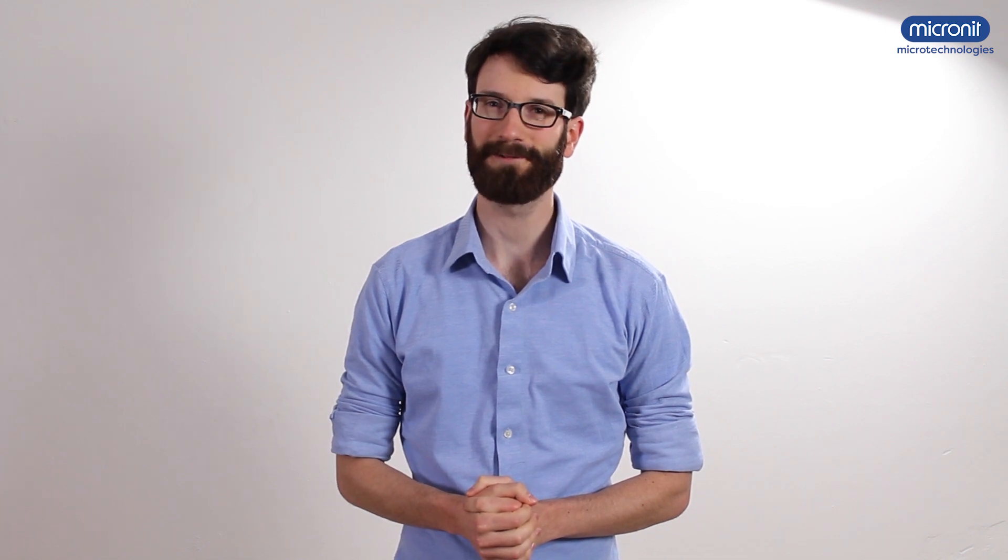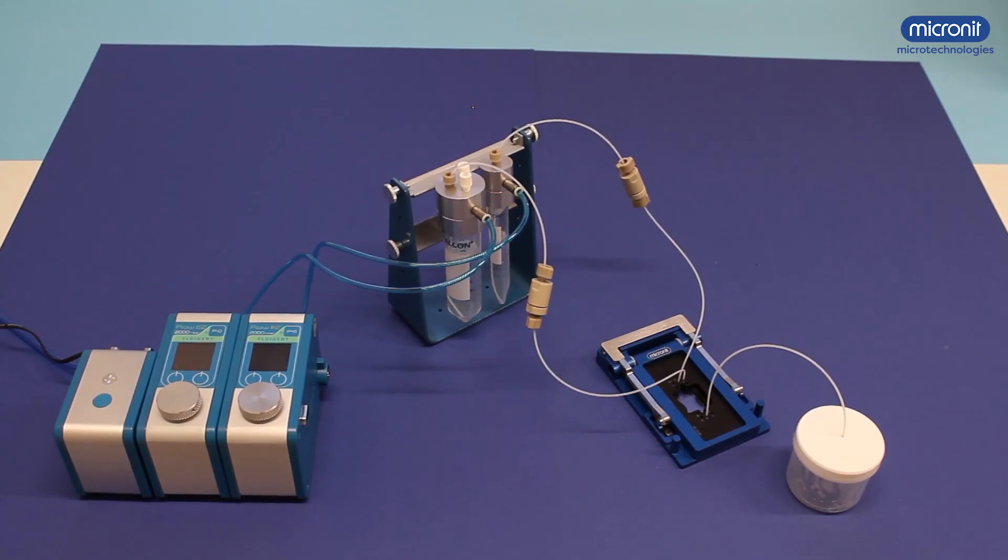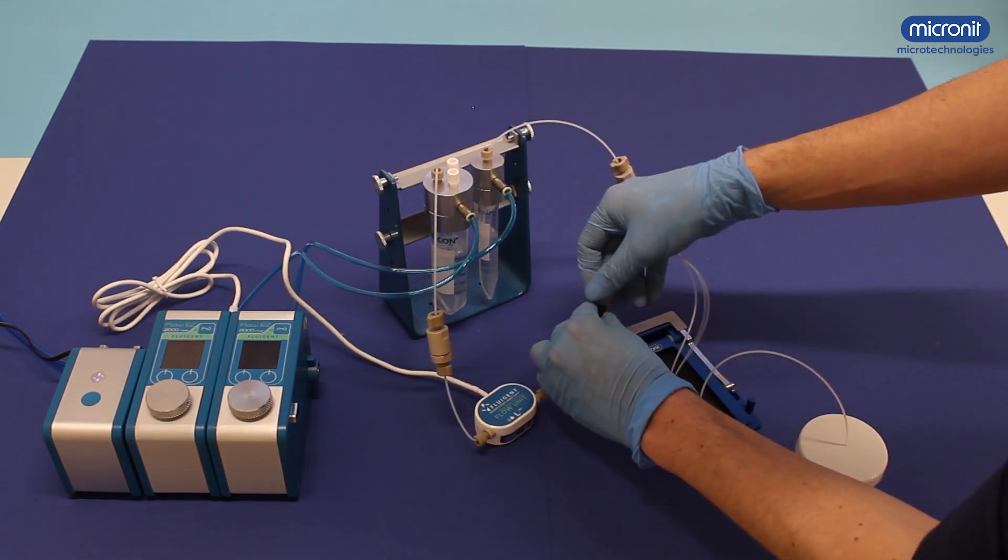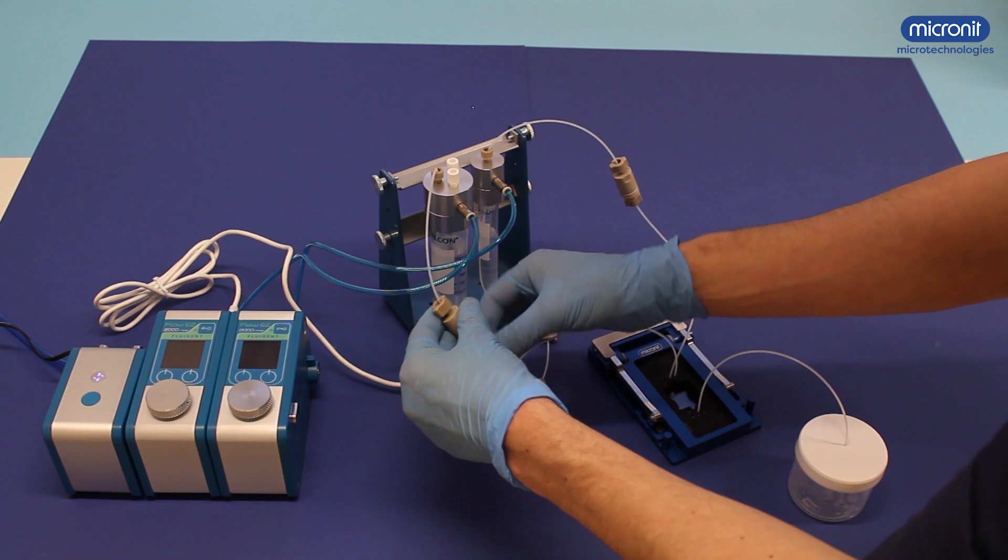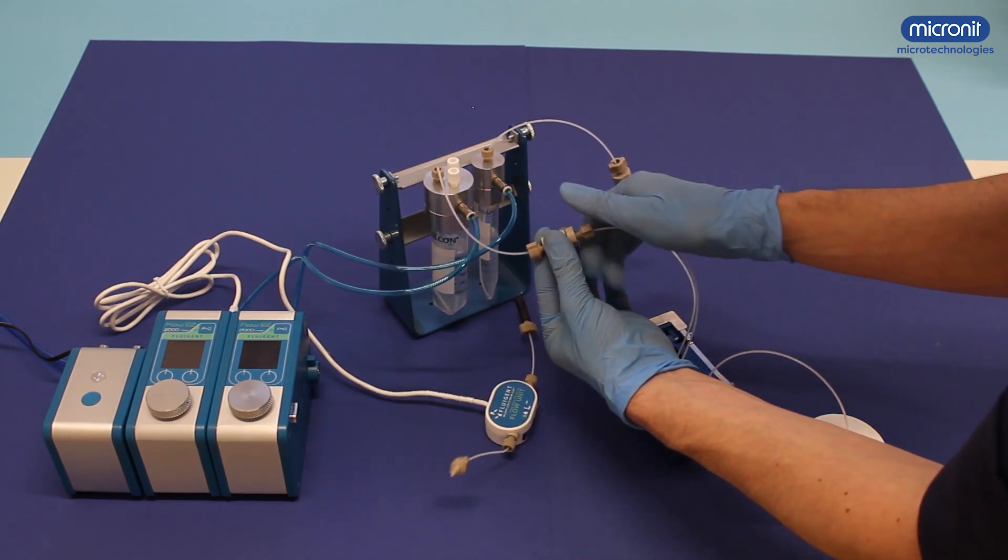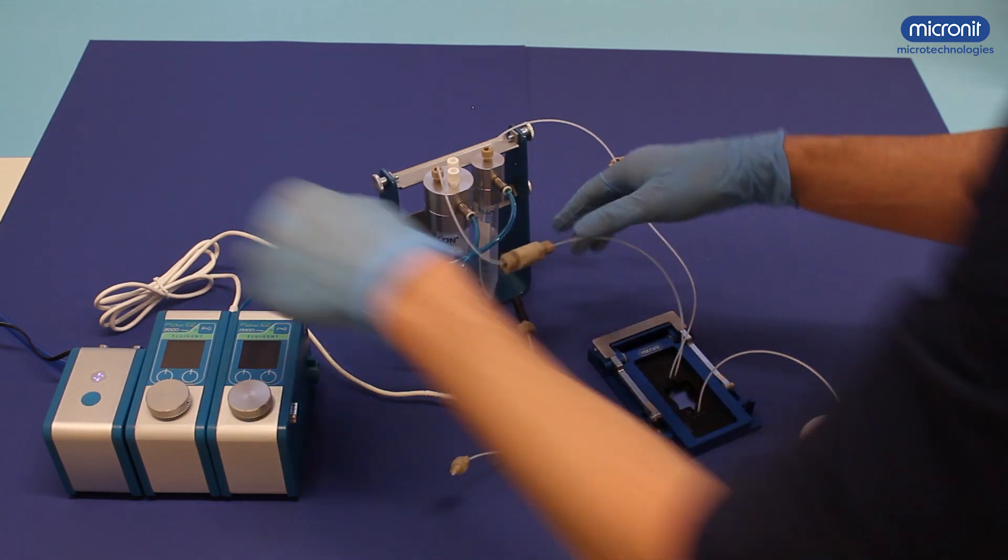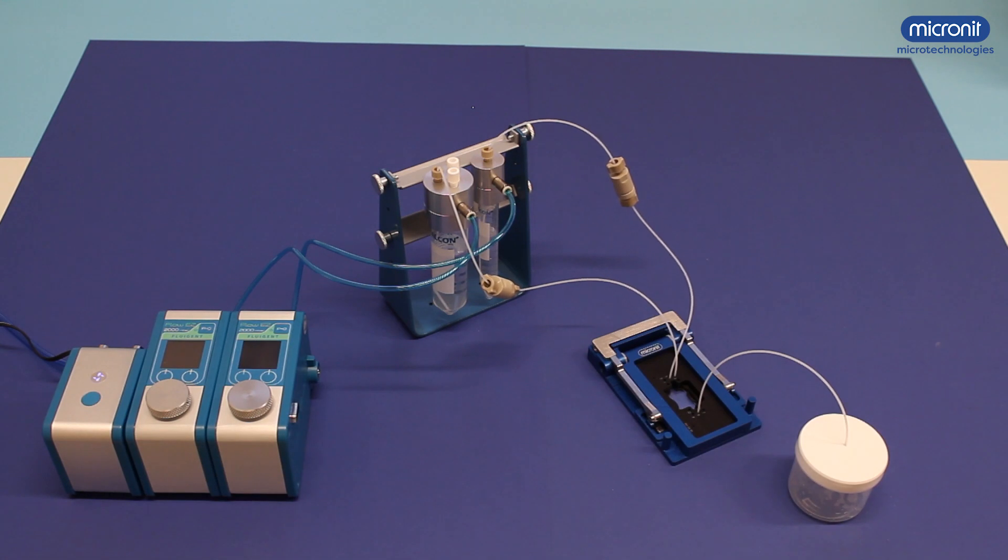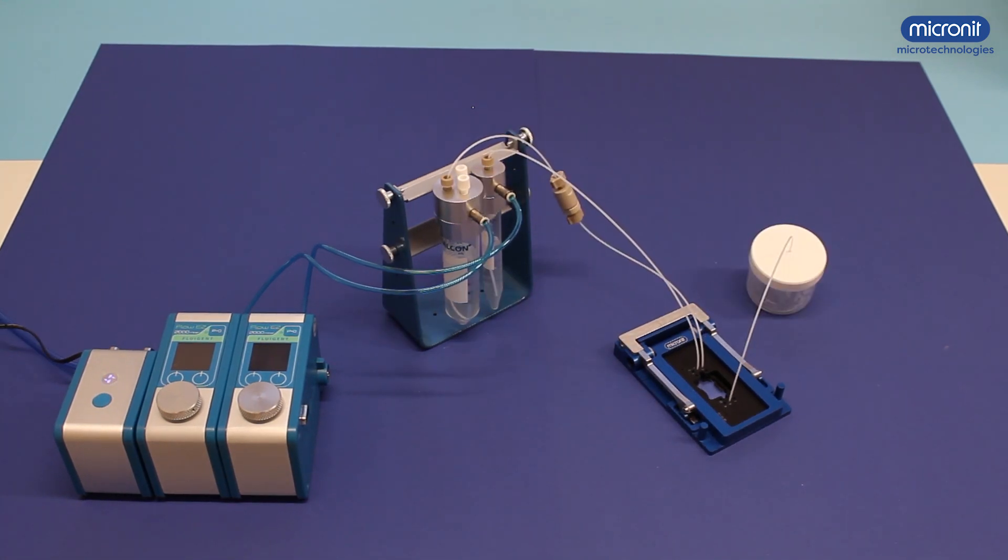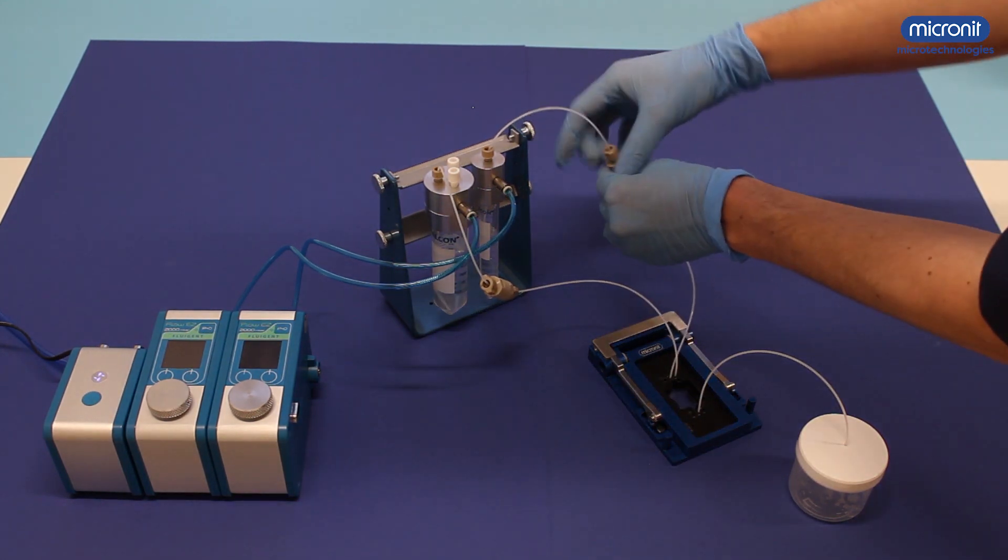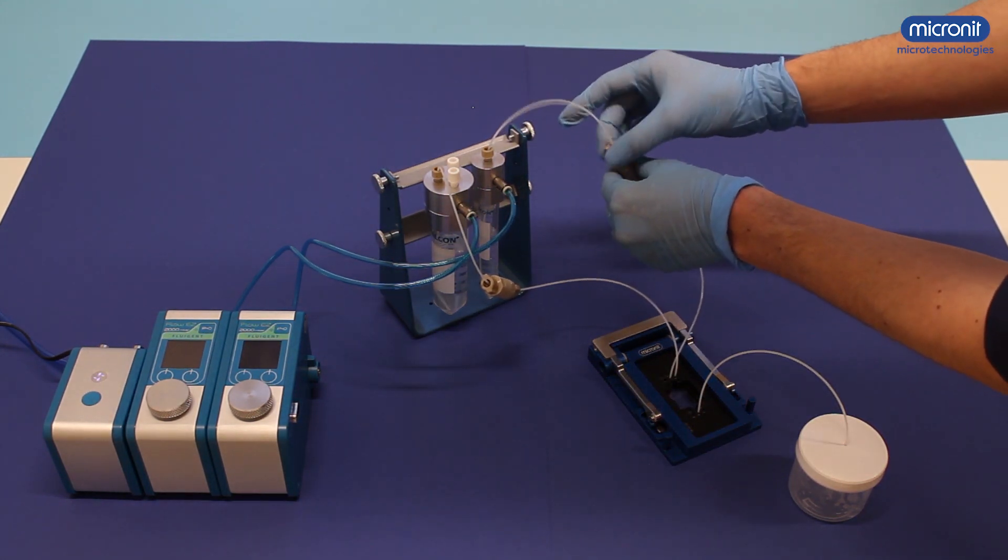Now let's play around with some other components that could be used. Here you have our setup again. This is what it would look like if you add a flow meter. And removing can be done as quick as this. You can also remove one filter, or both of them. Back to our original setup. Now let's exchange these pumps for syringe pumps.